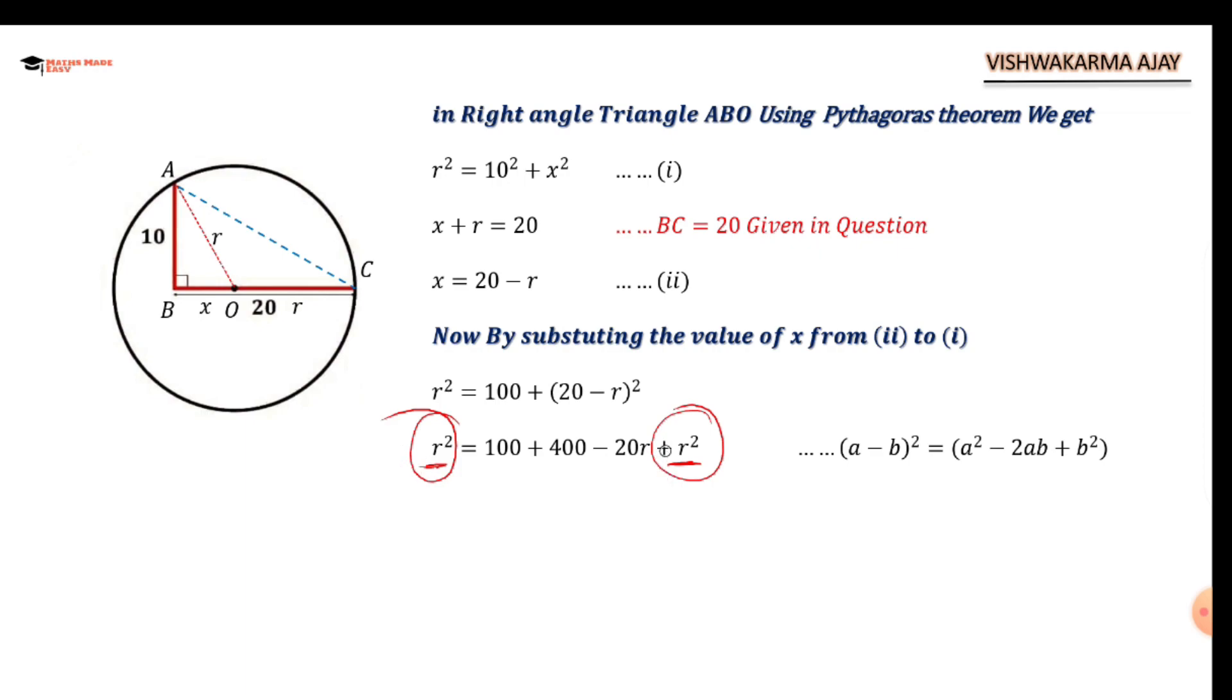They are both positive, so when one goes to the other side they will cancel each other. I'm going to remove this. Now I have 40R - that is coming to the left hand side - equals 100 + 400, which is 500.